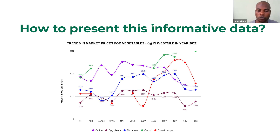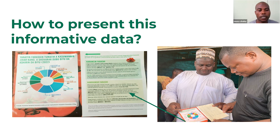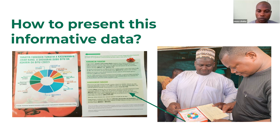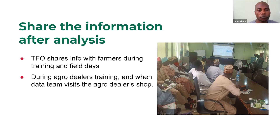This is the type of information we present to farmers. Sometimes we print hard copies — you can see some of the hard copies printed based on tomato, translated to local language, which is Hausa in northern Nigeria. This is our staff trying to discuss and share the results with the farmers so they can easily understand and make a proper plan on their next crop production. We also share information to farmers via our TFOs during training and field days. We are training agro-dealers and sharing information with them.